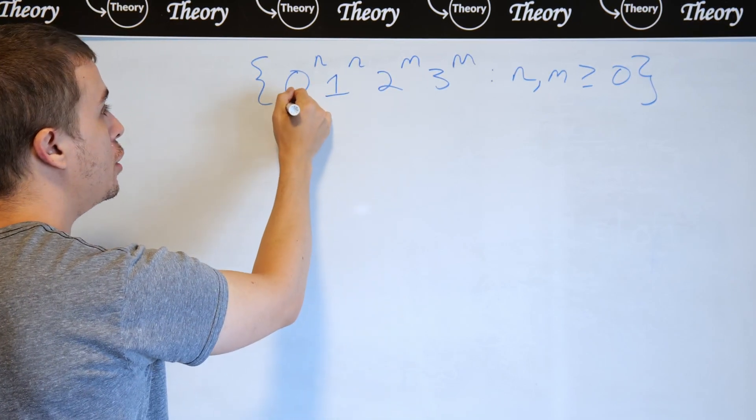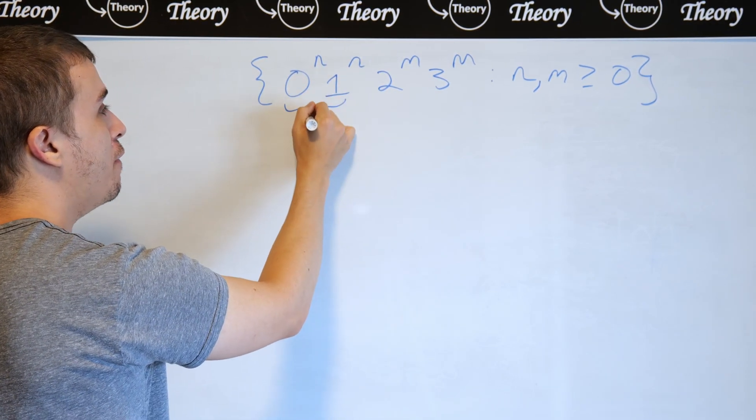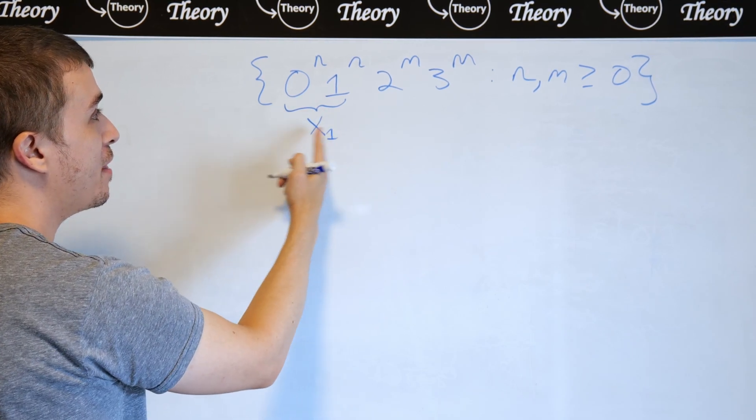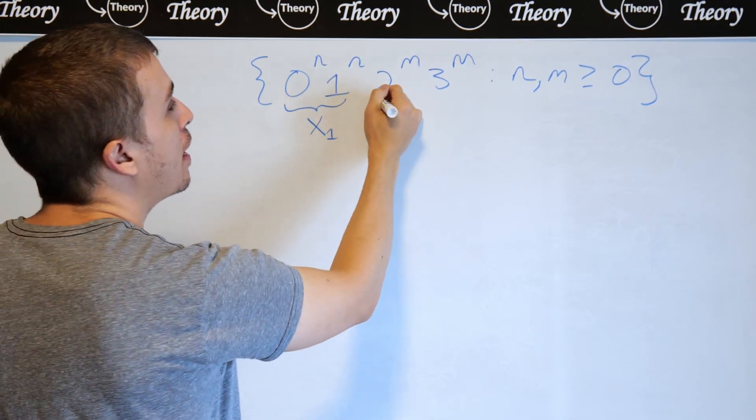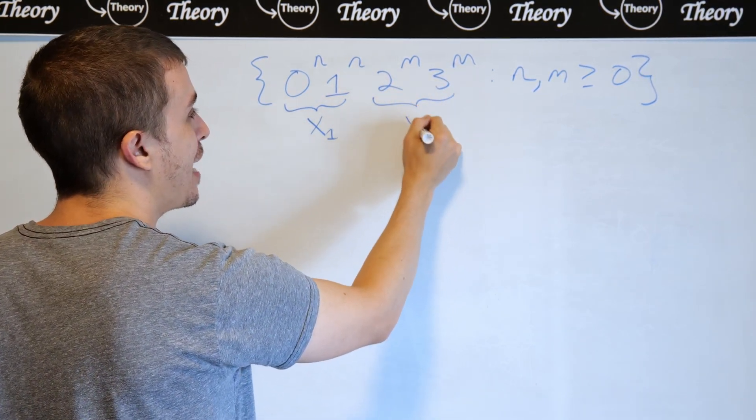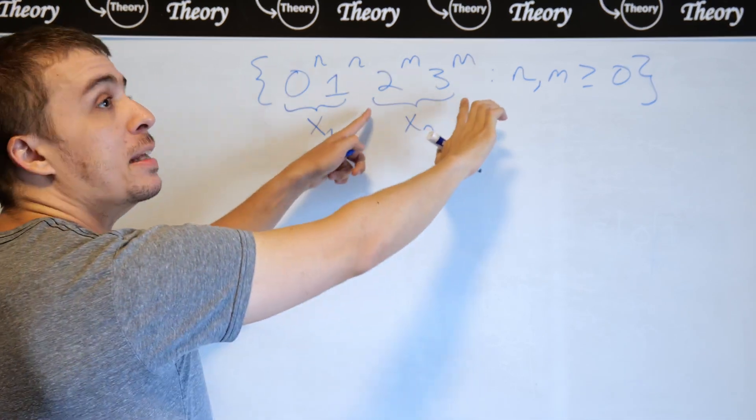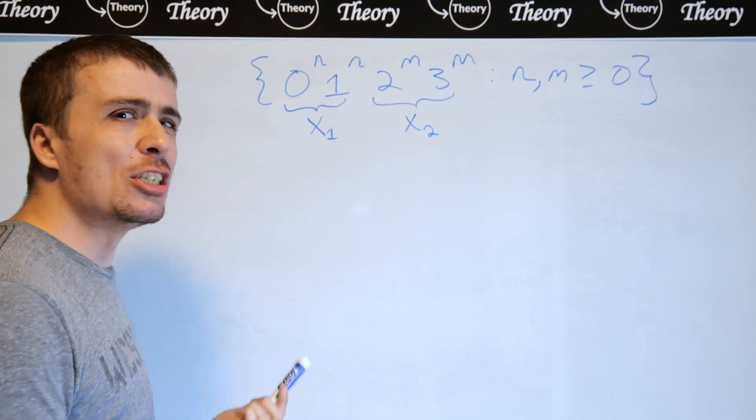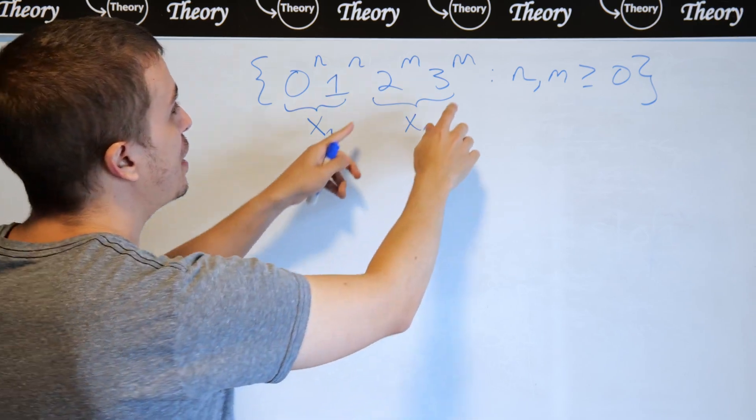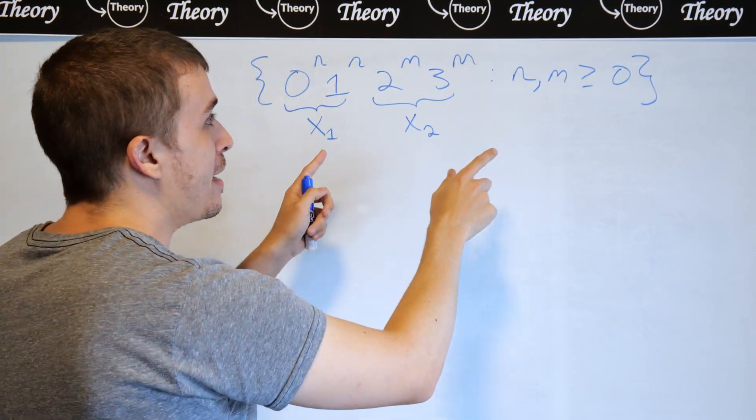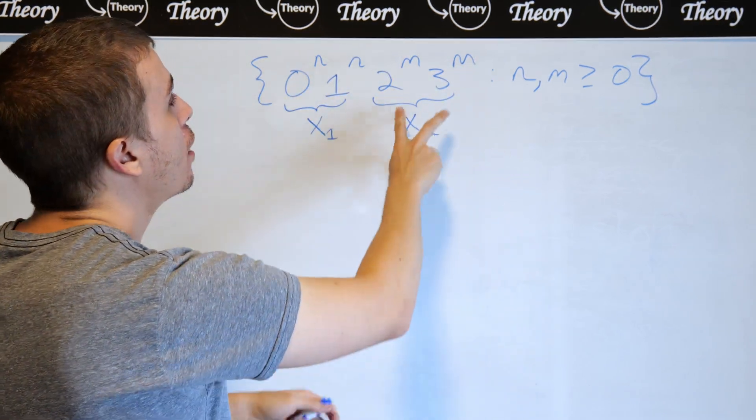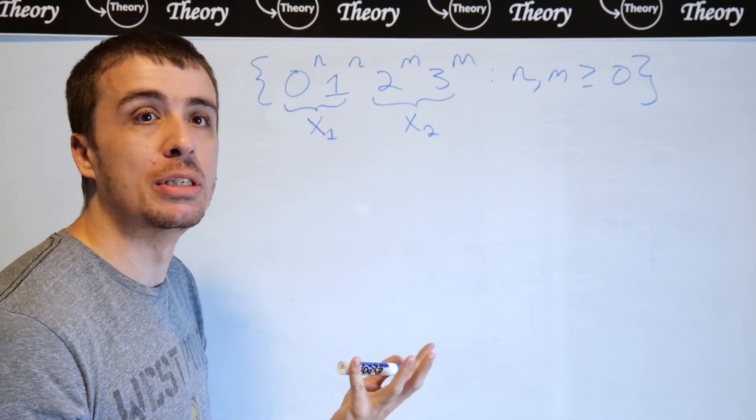So what we can do is have a variable I'm going to call x1 make the 0 and 1 part, and another variable called x2 to make the 2 and 3 part. They're essentially the same idea because there's no relation between n and m, and it's just changing characters since the essential structure is unchanged.